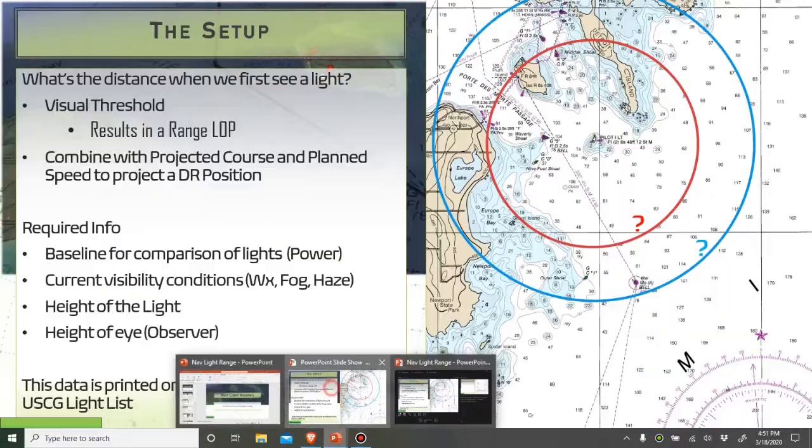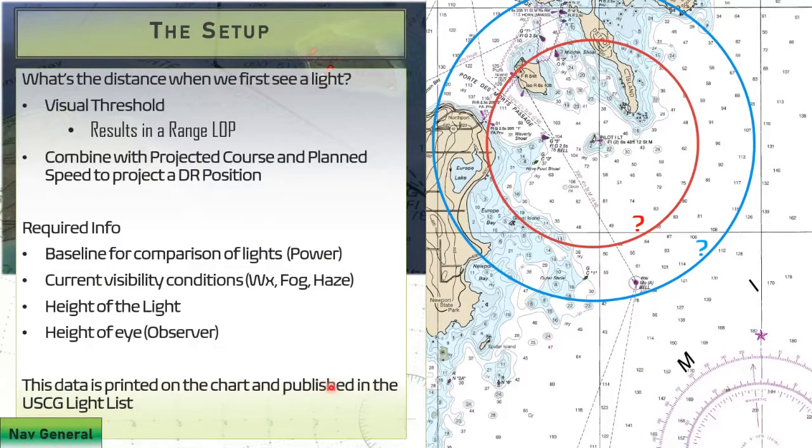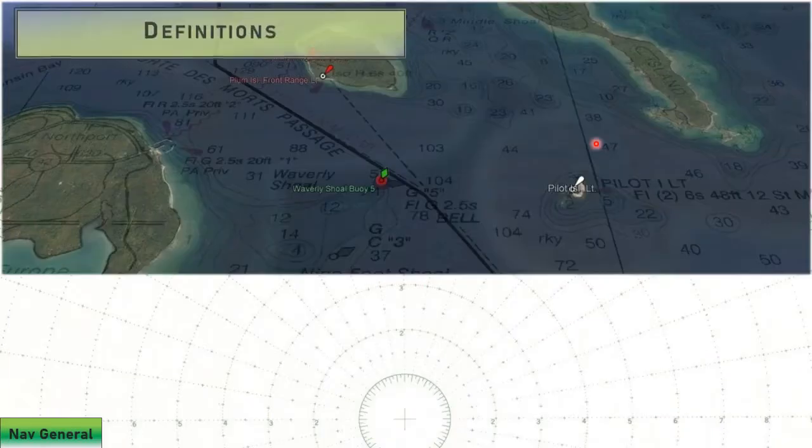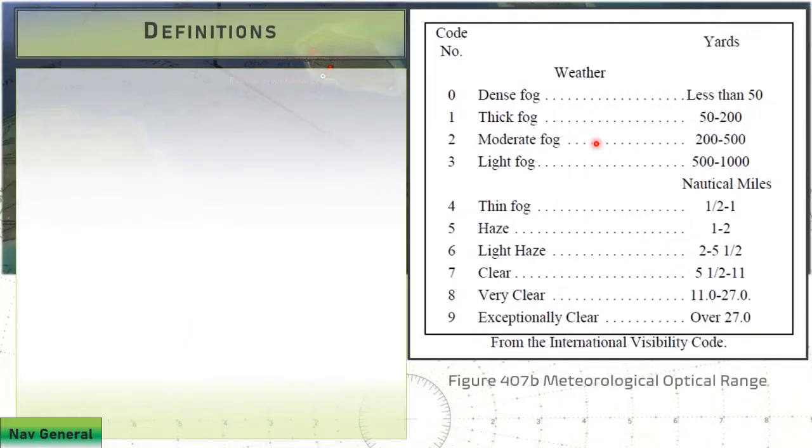We want to be aware that the most current data is in fact the U.S. Coast Guard light list and any Notice to Mariner data that might supersede that, updated weekly.